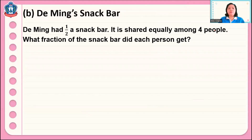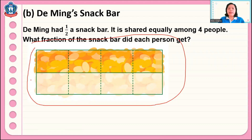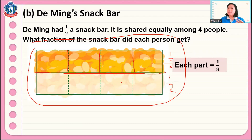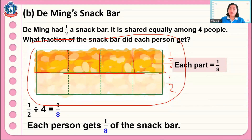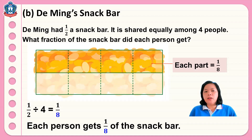Another problem: Timing had one half a snack bar, shared equally among four people. What fraction of the snack bar did each person get? We have one whole divided into two, giving one half. The one half is shared by four — dividing it into four equal parts gives four sections. Each part becomes one eighth. So one half divided by four is one eighth. Each person gets one eighth of the snack bar. That is how to divide a unit fraction by a whole number.